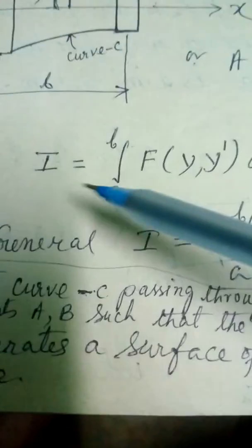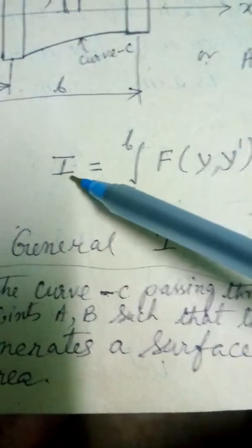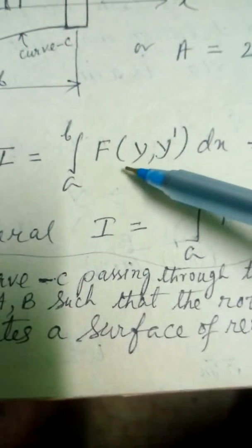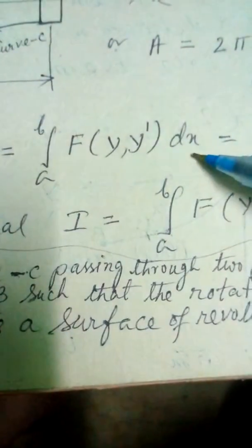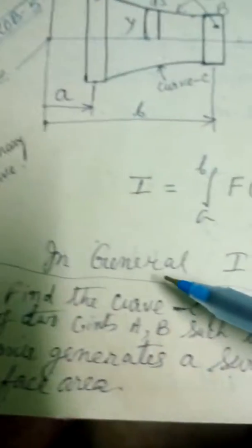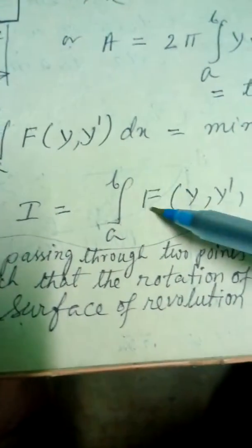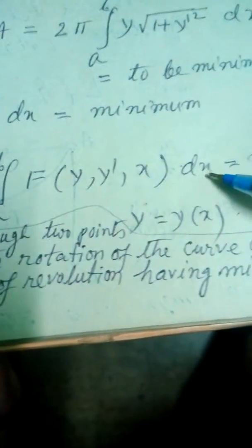Okay. Now, so the Hamilton's function, I equals the integration from a to b of the function of y, y' into dx equals minimum. Okay. Now, in general, I equals a to b, function of y, y', and x, dx equals minimum.